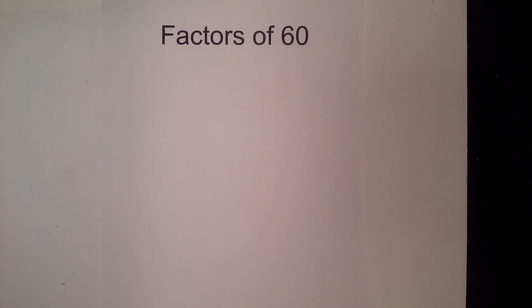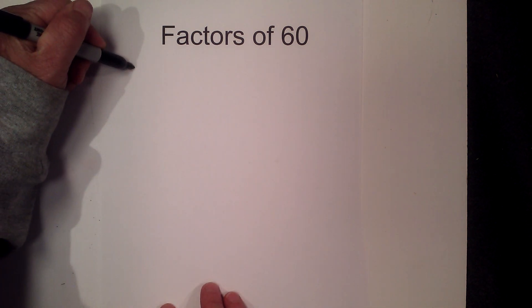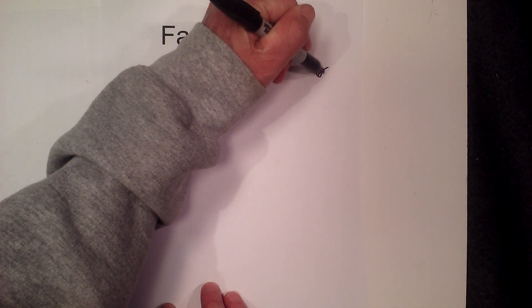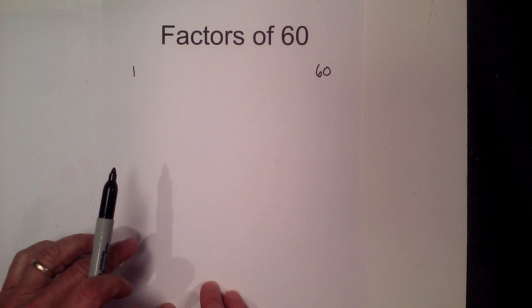In this video let's find the factors of 60 and the prime numbers of 60. So let's get started. I'm going to go 1 times 60 and find all the numbers in between that multiplied together to equal 60.